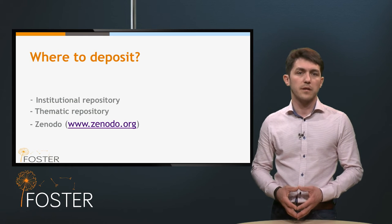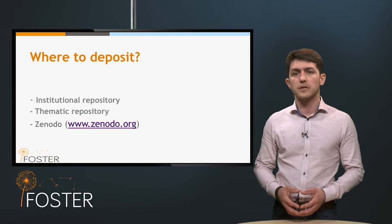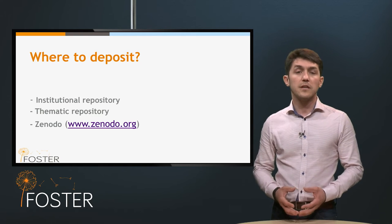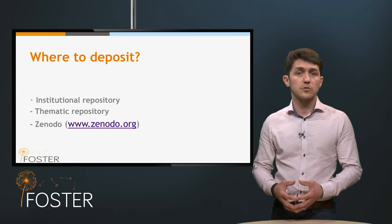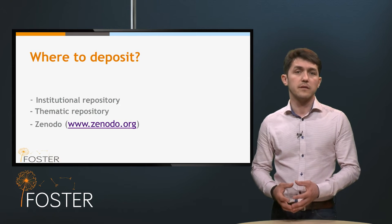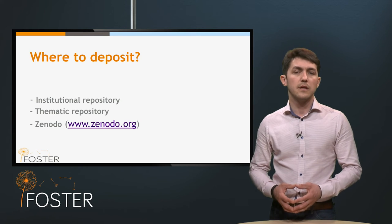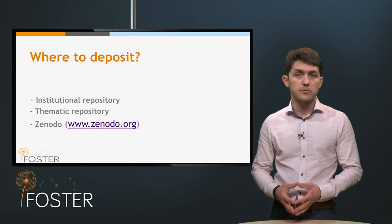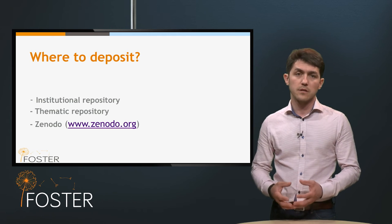Now, where do you deposit these publications? Researchers should deposit in a repository for scientific publications of their choice. This can be your own institutional repository of the research institution you are affiliated with, or a subject-based thematic repository. A third option is a centralized repository like the Zenodo repository, set up by the OpenAIRE project, which is an acceptable choice.